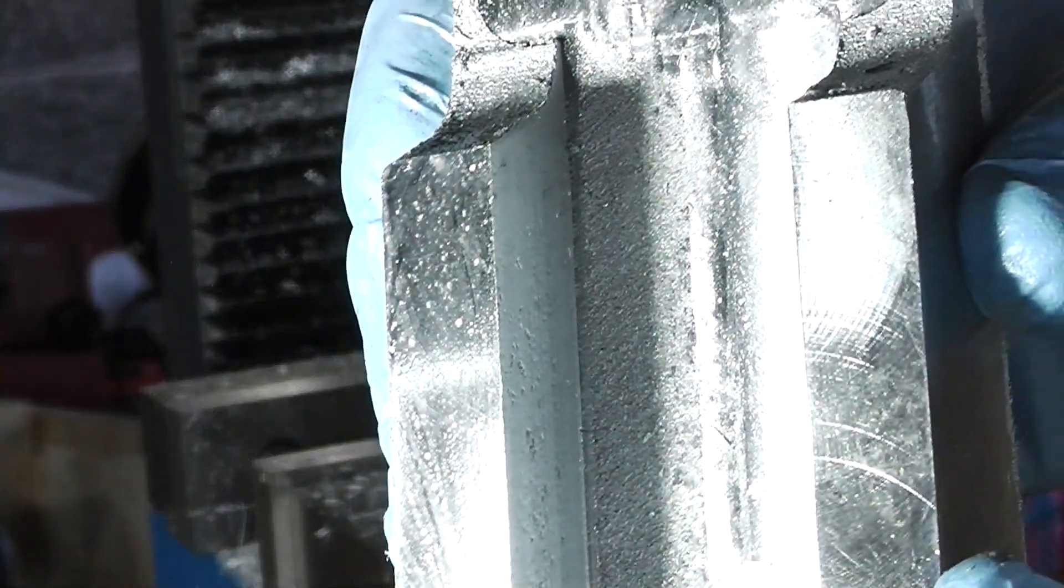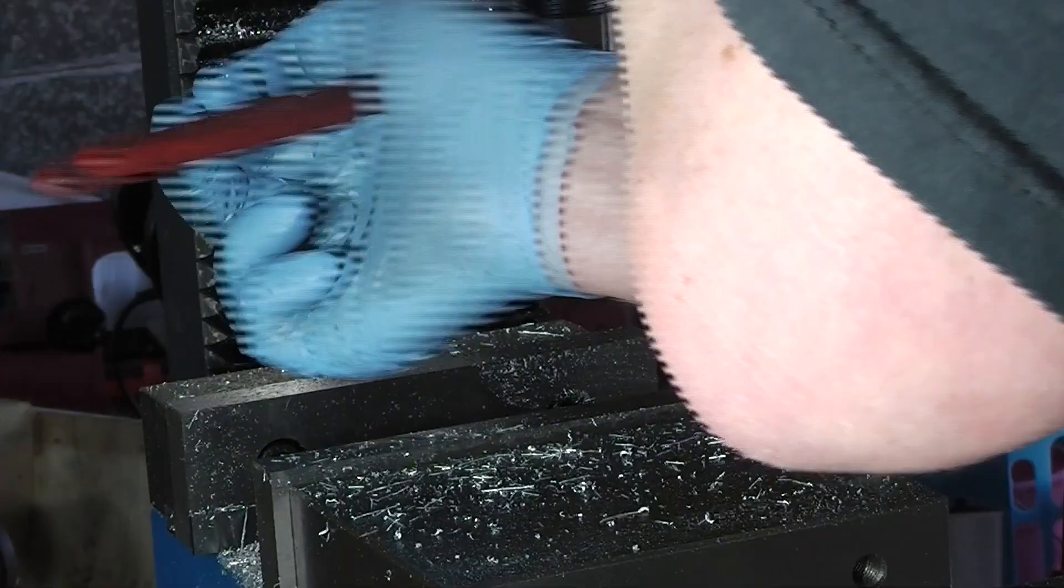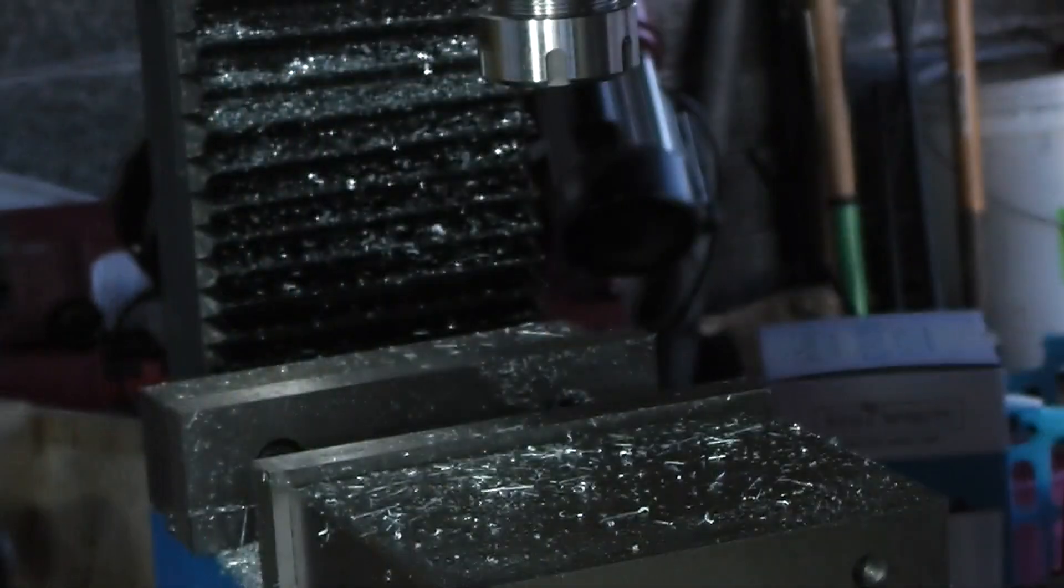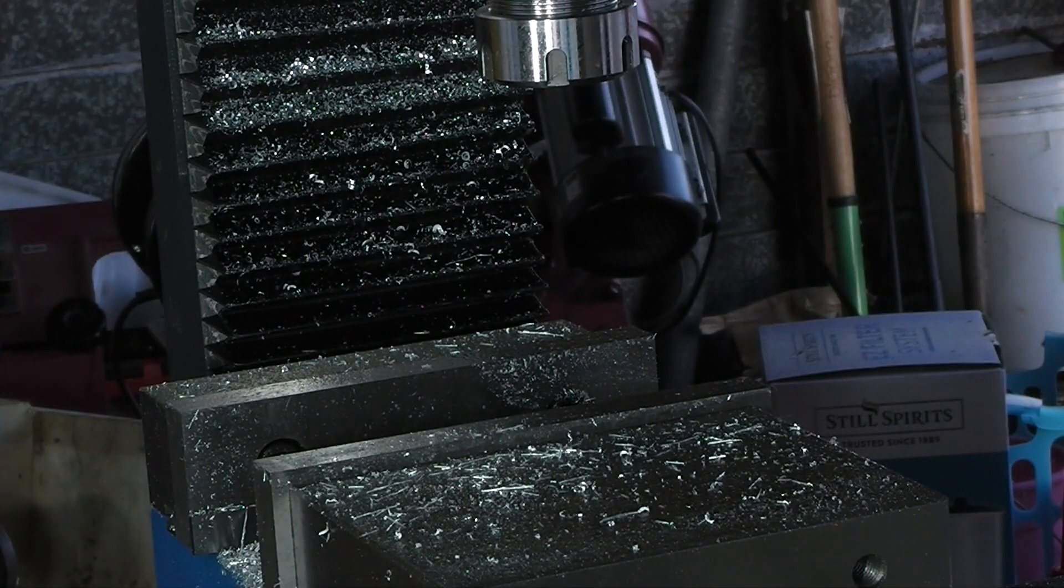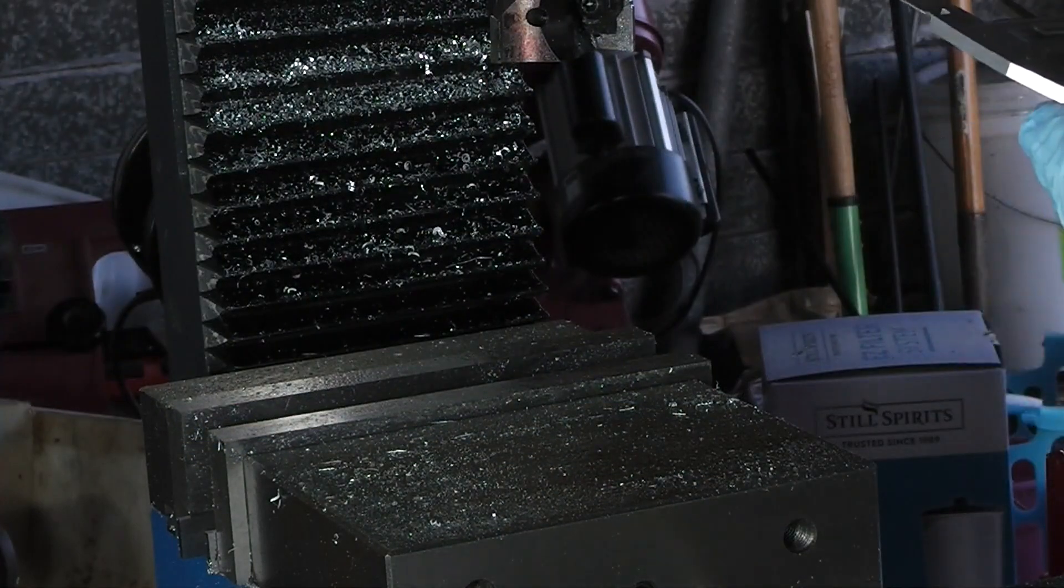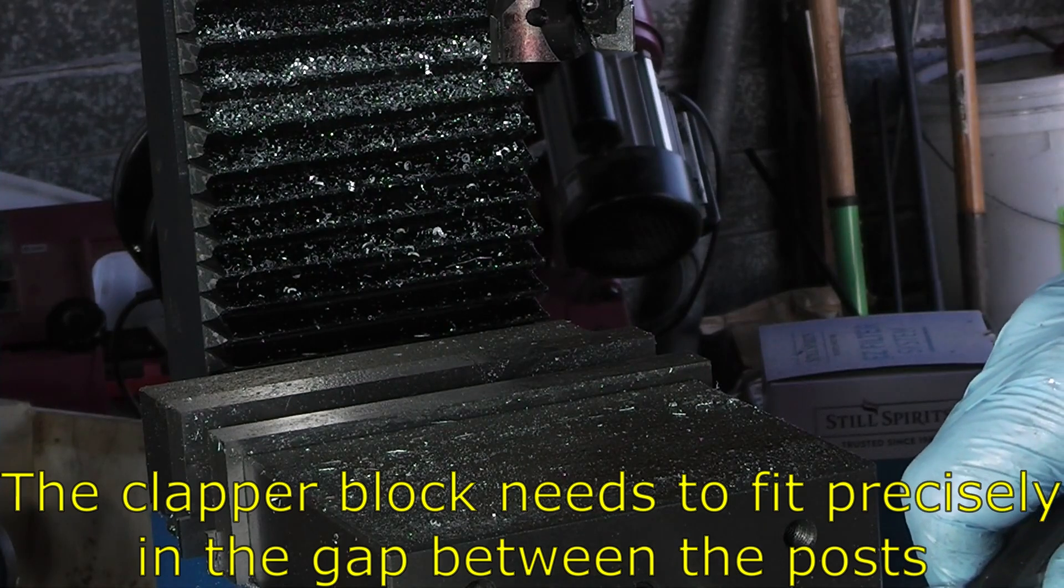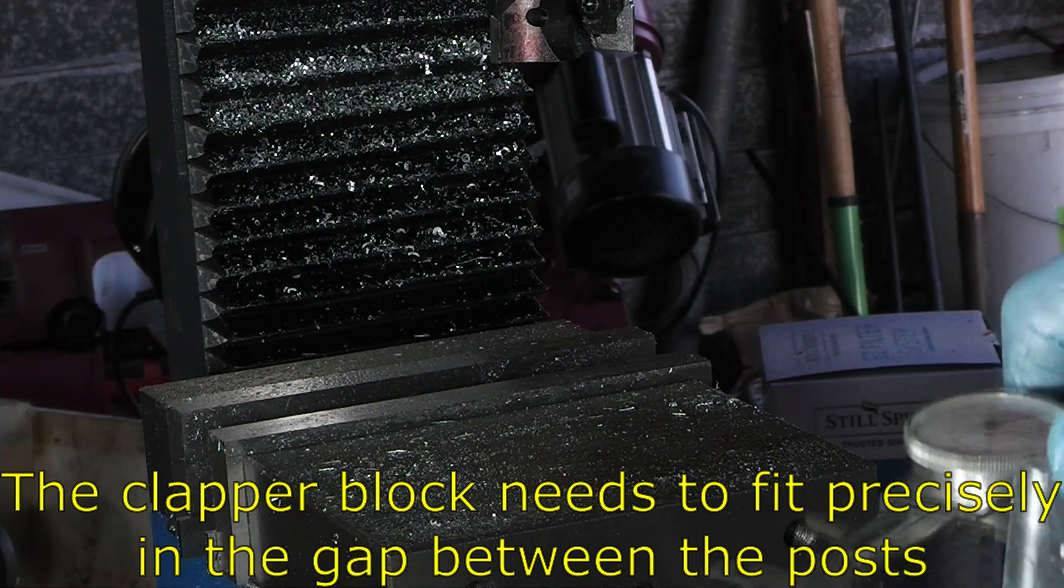There's still a bit of rough surface there, but the clapper block will be in front of that so I don't really mind. Blast. I did not mean to do that. 37.1mm across. This is 39.8mm.